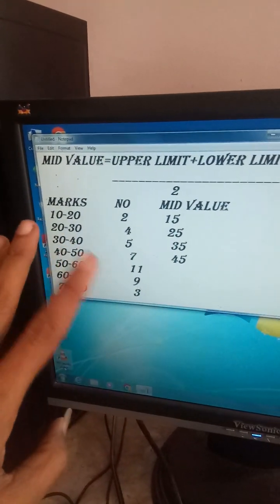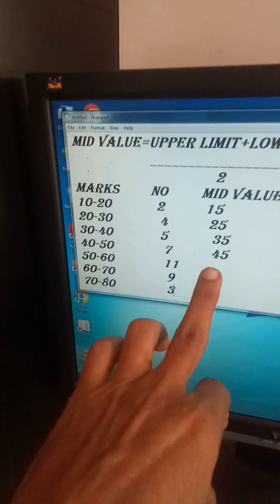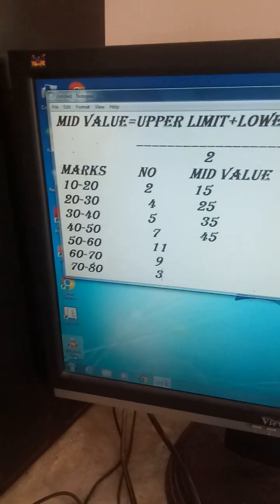This is lower limit plus upper limit divided by 2 equals mid-value. If you look at the value of mid-value, you need to calculate 55, 65, and 25.